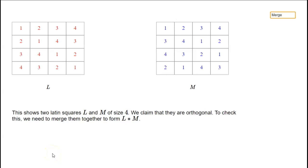This picture explains the notion of orthogonality for Latin squares. On the left we've got a Latin square called L. You can check it's Latin.